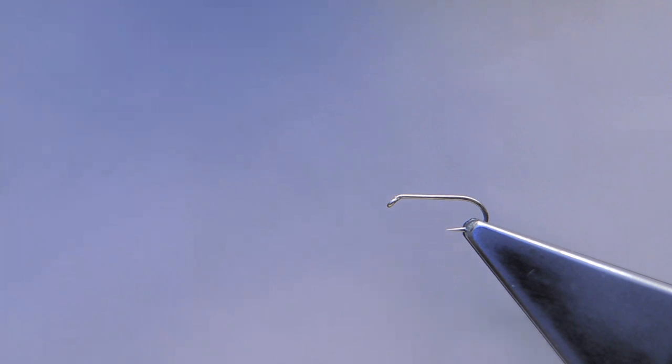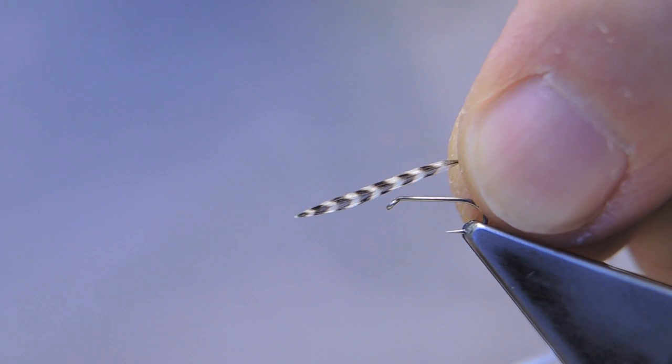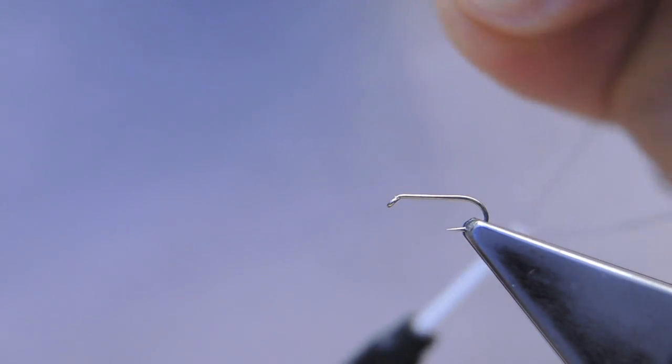For this video, I'm using a size 20 dry fly hook. 20 is also the largest size that I tie and fish the pattern in. I tie it down to size 28. The thread is Benetchi 12-0 in black, and the hackle is a small grizzly hackle.